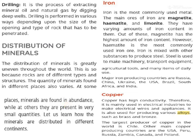Iron is the most commonly used metal. The main ores of iron are magnetite, hematite, and limonite, and they have various amounts of iron content. Magnetite has the highest amount of iron content. Hematite is the most commonly used iron ore. Iron is mixed with other substances to produce steel, which is used for many purposes including machinery, transport, agriculture, and daily-life items.